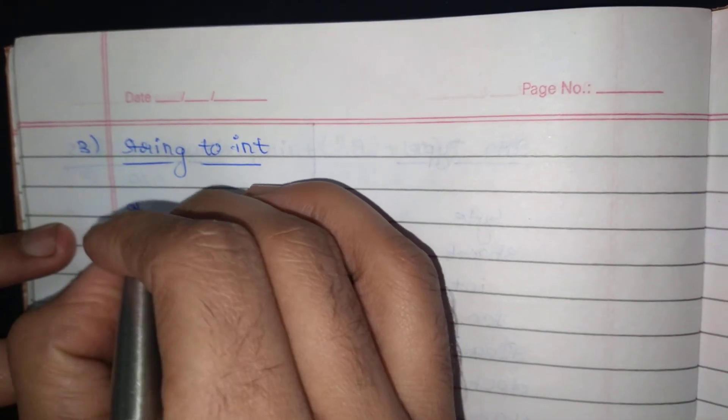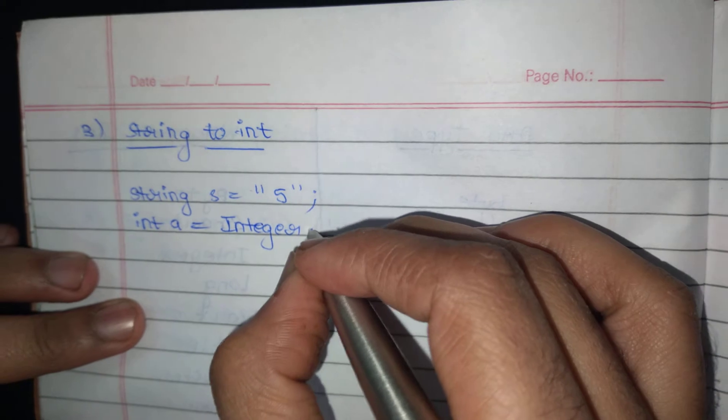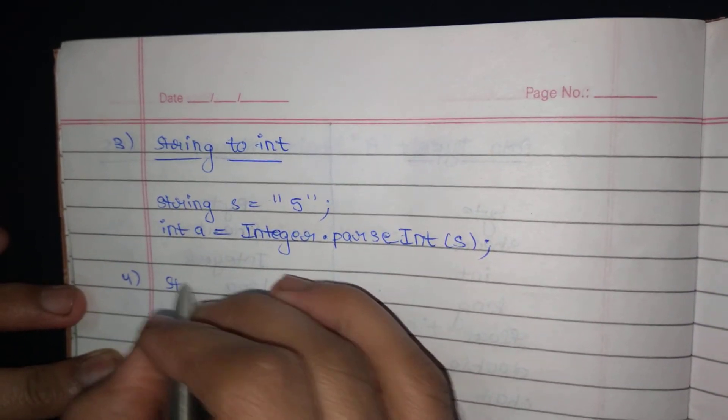Third: string to int. Suppose I am taking a variable string s equal to 5. To convert it into an int, I will use variable a and write Integer — with capital I, as it is the wrapper class — dot parseInt. Keep in mind here I write only parseInt, not parseInteger. Then s — it will convert to 5.